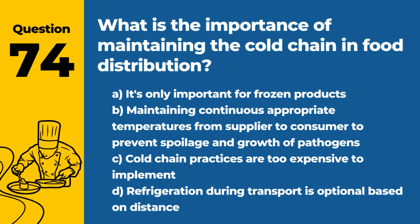Question 74. What is the importance of maintaining the cold chain in food distribution? The answer is B: Maintaining continuous appropriate temperatures from supplier to consumer to prevent spoilage and growth of pathogens. The cold chain is vital for food safety.